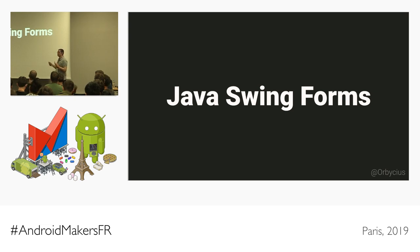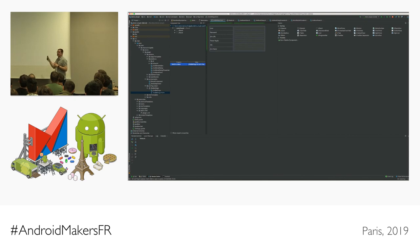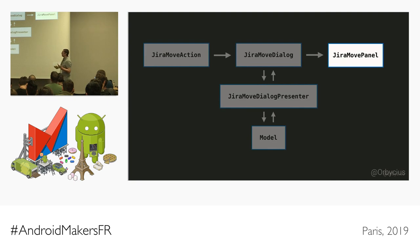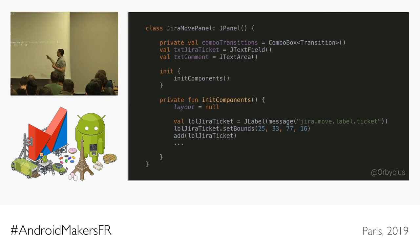The IntelliJ Java Swing form editor is quite difficult to work with, so I use Eclipse instead — don't judge me. I just copy the code, convert it to Kotlin, and paste it back. Use whatever tool works for you. The panel is simply a class that extends JPanel, and the UI code you generate from Eclipse can be converted to Kotlin and placed there.